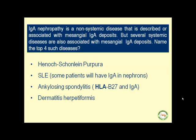Ankylosing spondylitis is associated with IgA and more importantly with HLA-B27 deposits. This condition is more common in men and is likely accentuated by hyper-testosterone conditions, especially in younger males. Finally, dermatitis herpetiformis is another important association. Despite its name, it is not associated with herpesvirus — it is heavily associated with celiac disease and gluten sensitivity. The term likely derives from the resemblance of its skin rash to that of herpes.